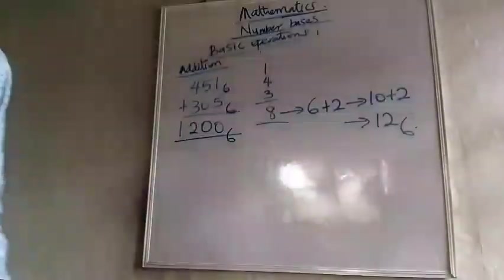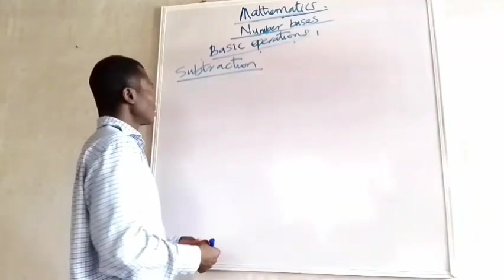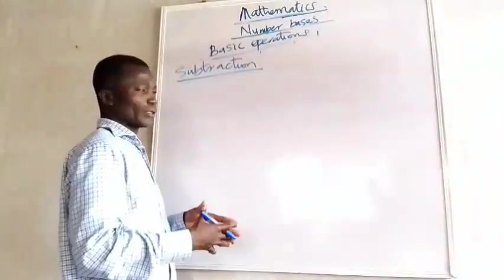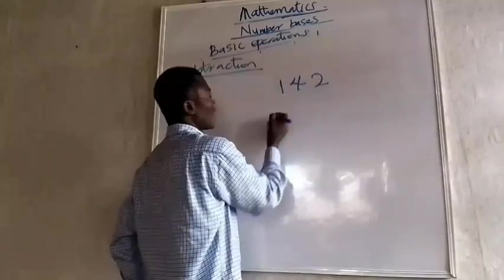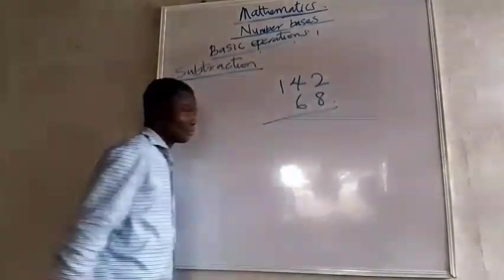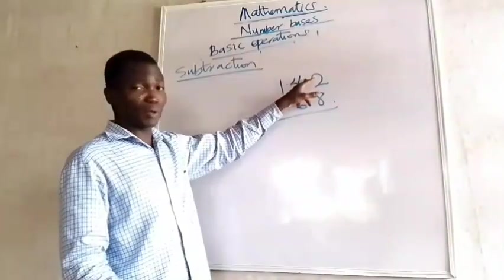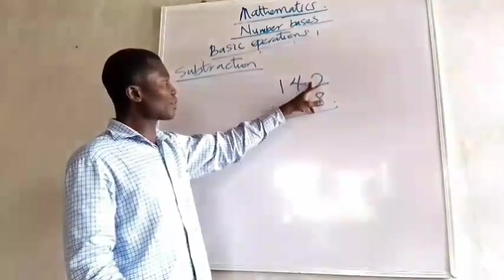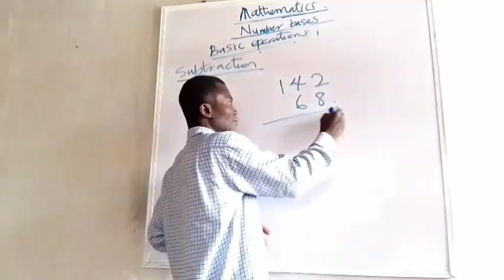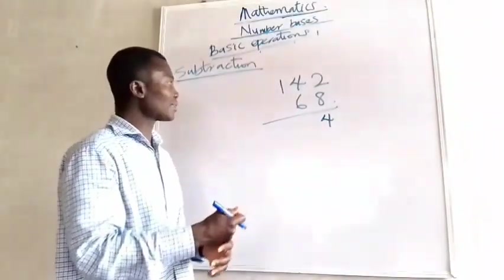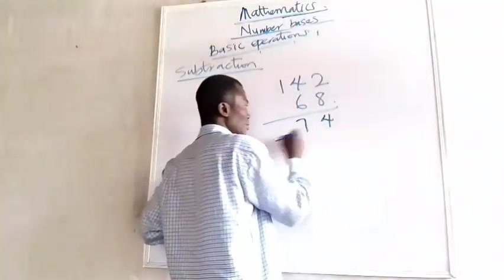Now let's go to subtraction. When you subtract, the number gets lesser. In base 10, say I have 142 minus 68: 8 from 2 won't work, so I take one from the next position. Borrowing makes that position 10, turning the current digit to 12. So 8 from 12 gives 4. Then 6 from 3 won't work, so I borrow again — the borrowed 1 becomes 10, and 10 plus 3 is 13; 6 from 13 is 7.